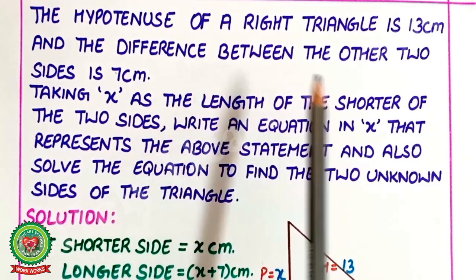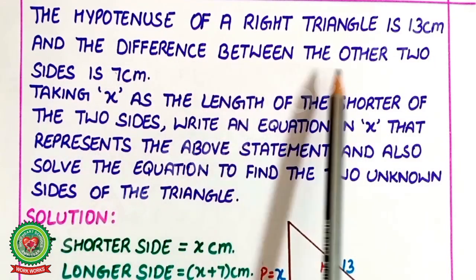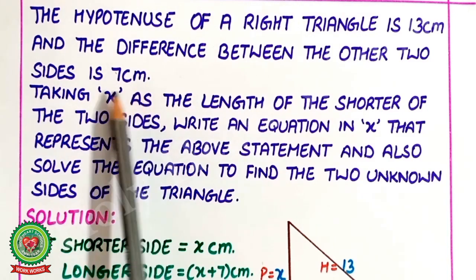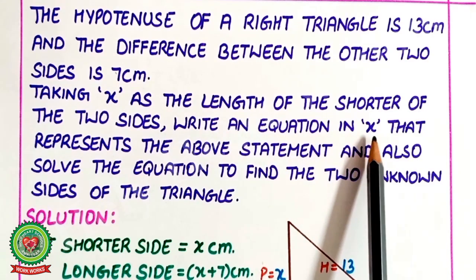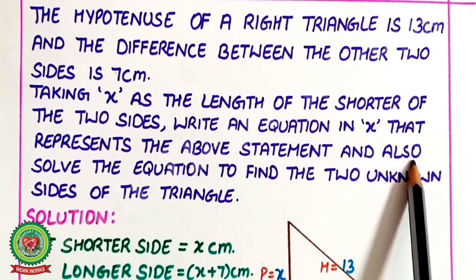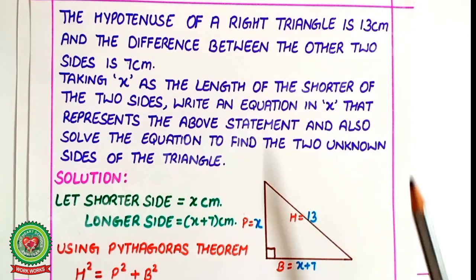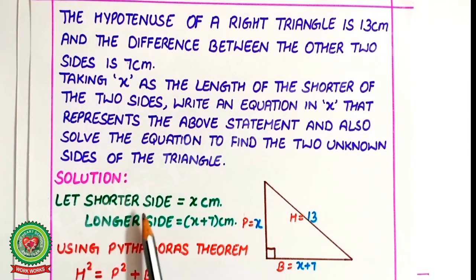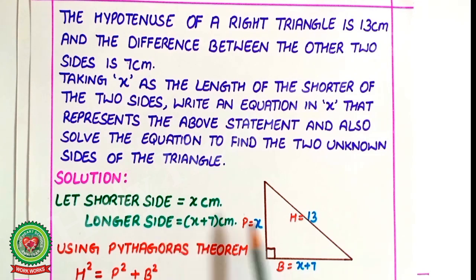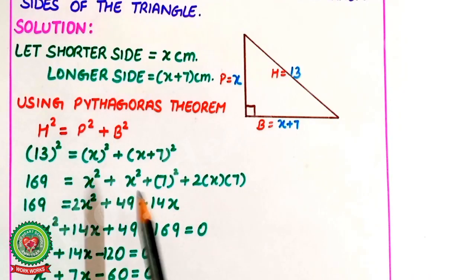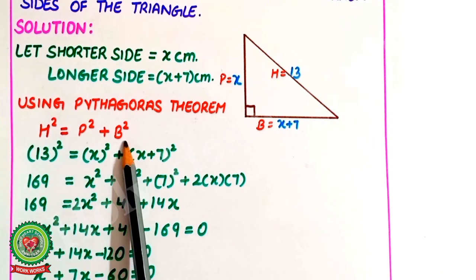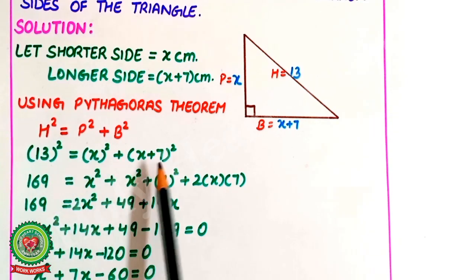Example 4: The hypotenuse of a right triangle is 13 cm and the difference between the other two sides is 7 cm. Taking x as the length of the shorter side, write and solve an equation to find the two unknown sides. Let the shorter side (perpendicular) be x cm and the longer side (base) be x plus 7 cm. By Pythagoras theorem: hypotenuse squared equals perpendicular squared plus base squared, so 13 squared equals x squared plus (x plus 7) whole squared.